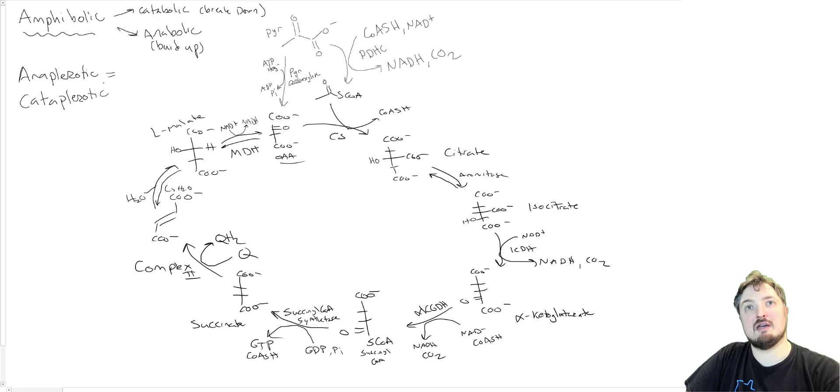Which means if you think about ana being building, this would be cycle building or cycle filling. So we can fill in the cycle with certain reactions. And then cataplerotic would be cycle taking or taking things off the cycle.